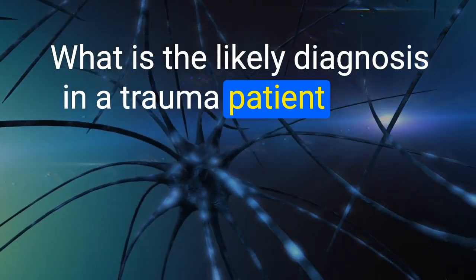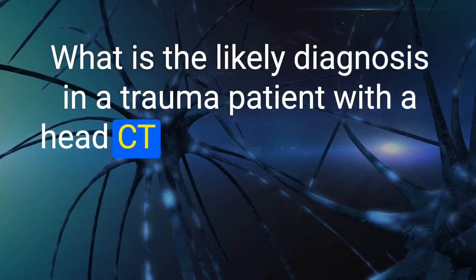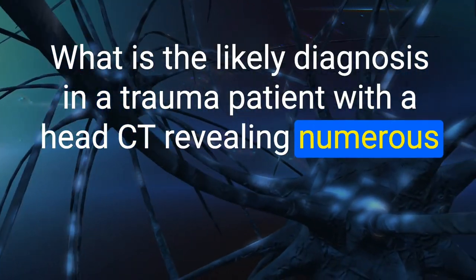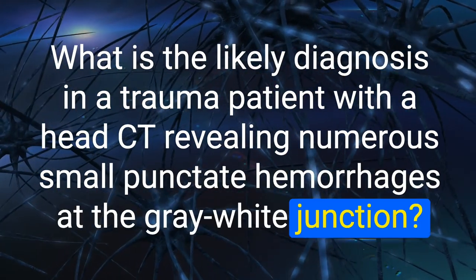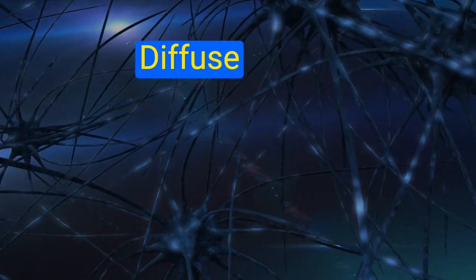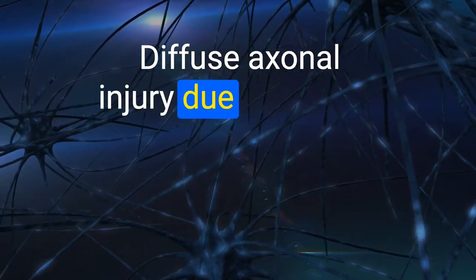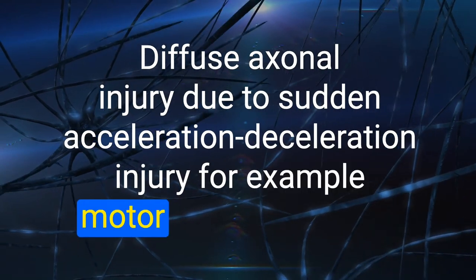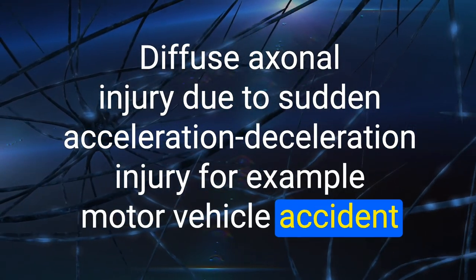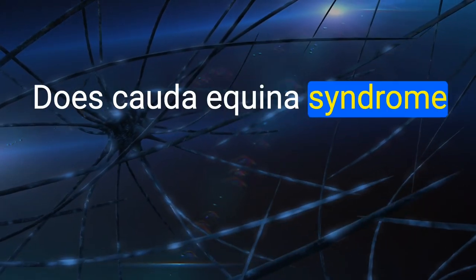108. What is the likely diagnosis in a trauma patient with a head CT revealing numerous small punctate hemorrhages at the gray-white junction? Diffuse axonal injury — due to sudden acceleration-deceleration injury (e.g., motor vehicle accident).